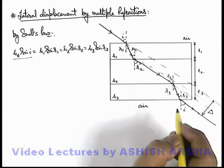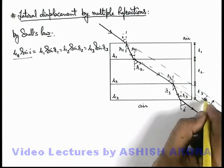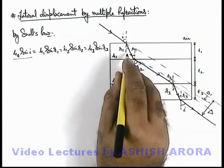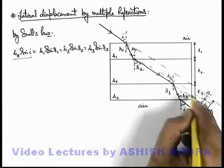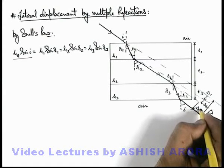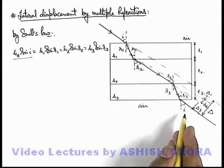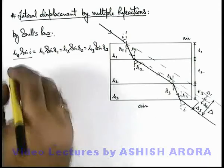Say if this is Δ1 which is due to the first slab, and this is Δ3 which is due to the third slab. So here we can write that total lateral displacement along the direction of incident ray is...